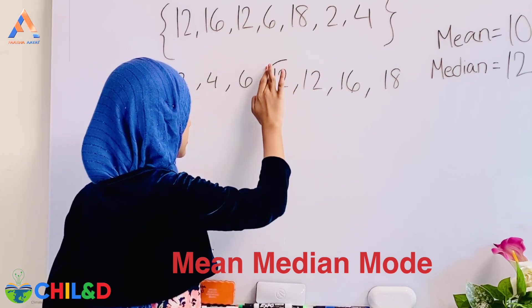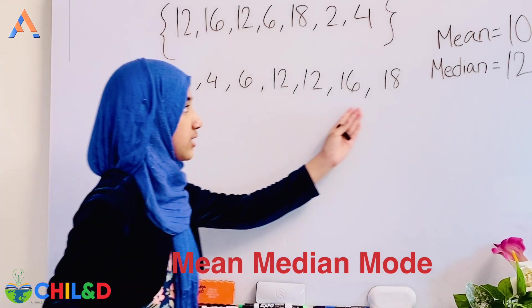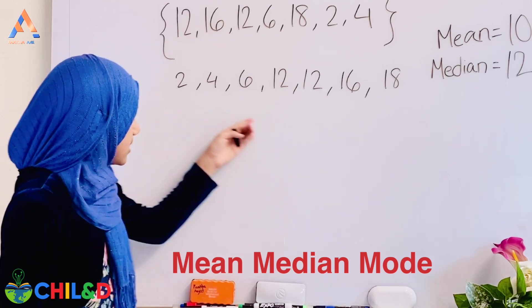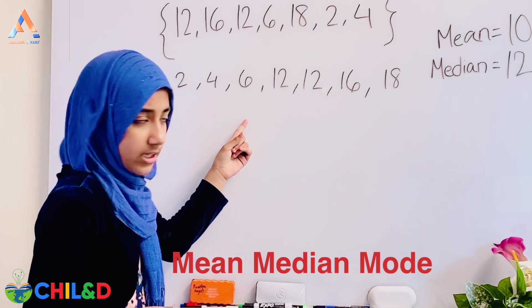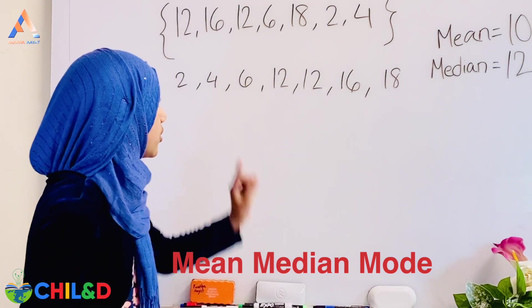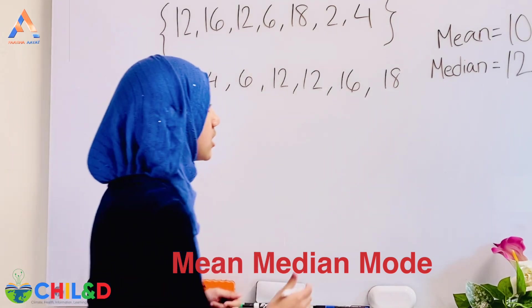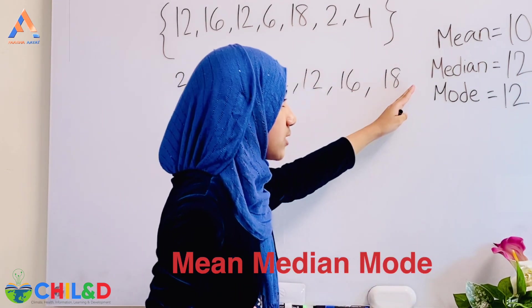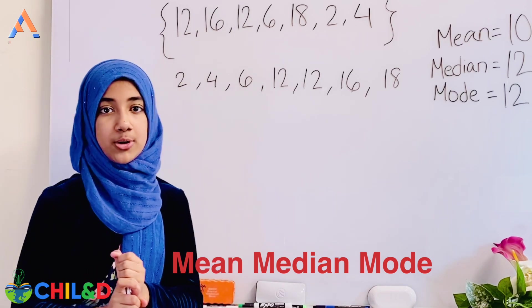The median is 12. Now we also need the mode. The mode is the number that appears the most. In this sequence, 12 appears twice while the others appear once, so the mode is 12.